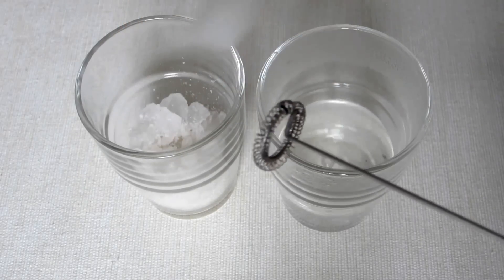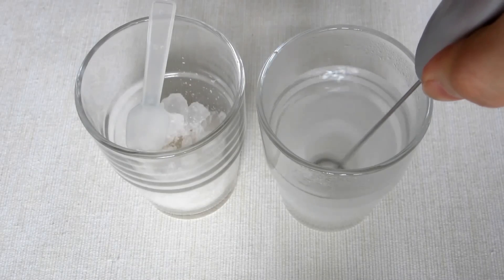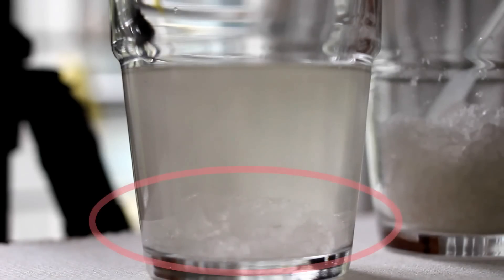By the way, don't add the whole amount into the jar, we are making seed crystal only. Saturated solution is made when you can see some alum at the bottom of the jar.